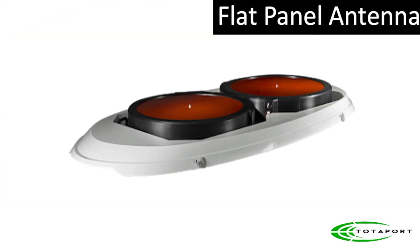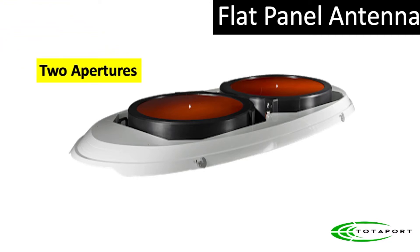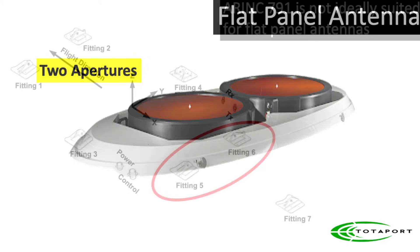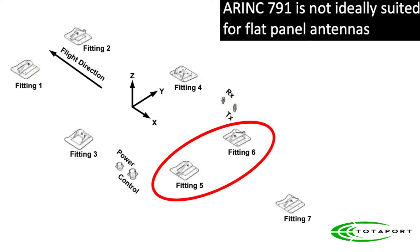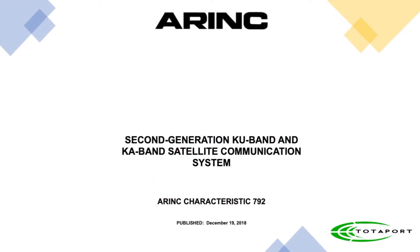Another development was our first flat-panel antenna, which has two apertures. Lugs 5 and 6 are right where the second aperture would go — a poor solution that forces the antenna to be taller than it should be, increasing drag. ARINC 792 was first published in 2018 to address flat-panel antennas and to define the second-generation SATCOM system.